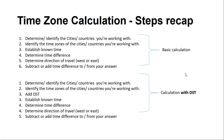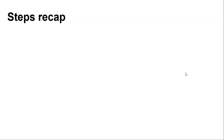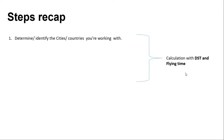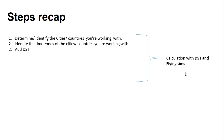The third category is calculations with DST and flying time. Things stay largely the same: we identify the countries, identify their time zones, and then check which of the two countries practices DST — writing in brackets 'plus one hour DST.' Please remember that DST will never be minus one hour or plus two hours; it is always plus one hour.